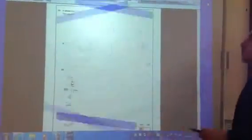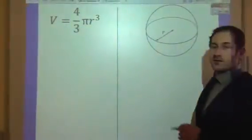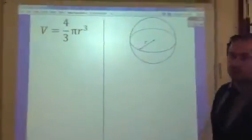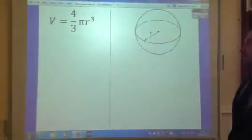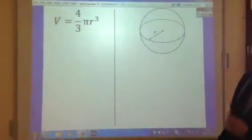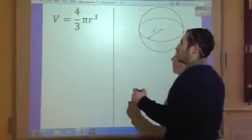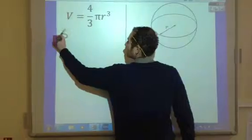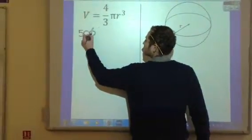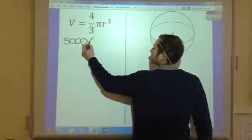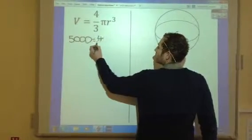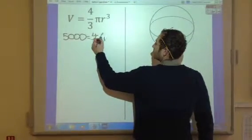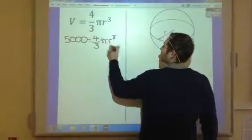So we need the volume of the sphere formula, which I've put on the board. And then all we're going to do is substitute the values that we've been given into the equation. So, 5000 centimeters cubed equals 4/3 π r³.